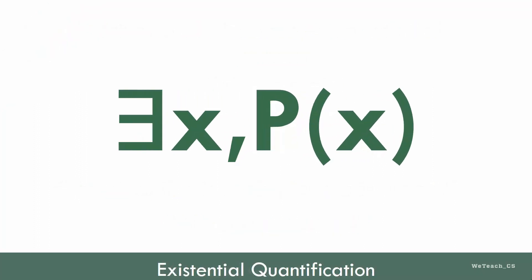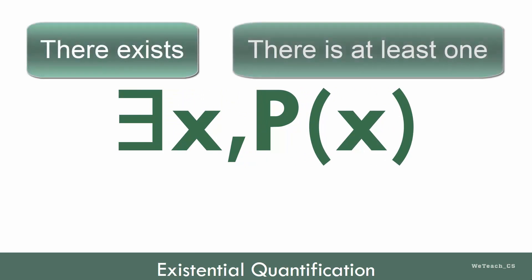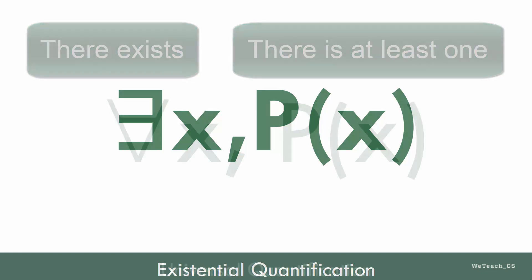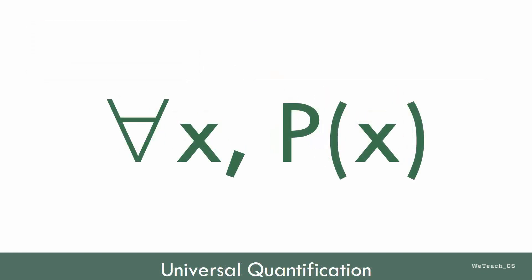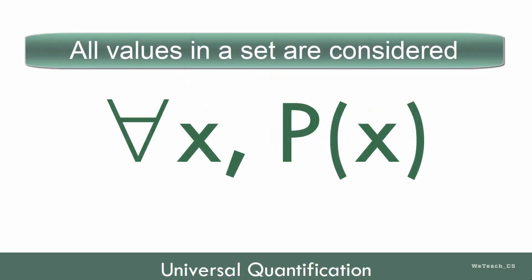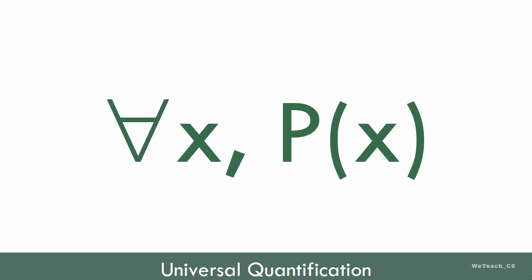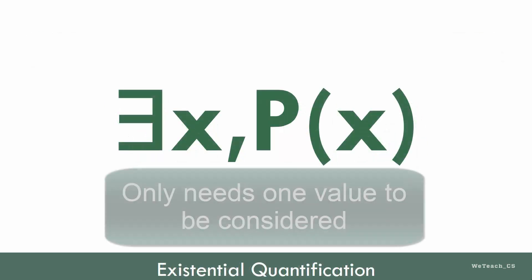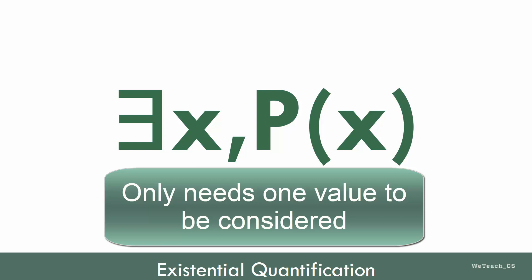Next, we will look at the existential quantification, represented by the reversed letter E, which translates, There exists, or There is at least one. Previously, in universal quantification, we were working with all the members of the universe of discourse, or all the values of the set being considered. By contrast, existential quantification only cares that at least one of the values makes the situation true.